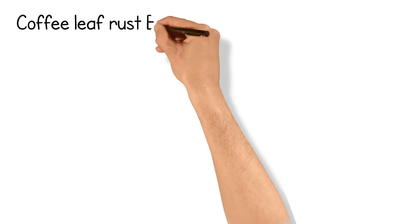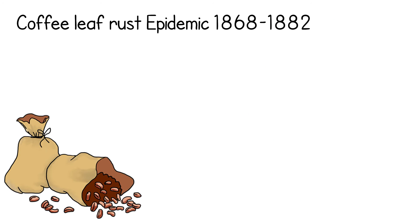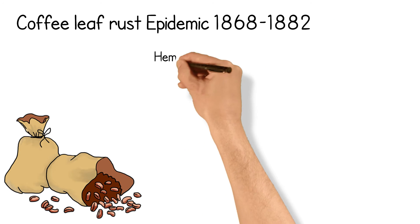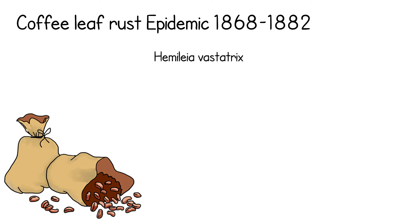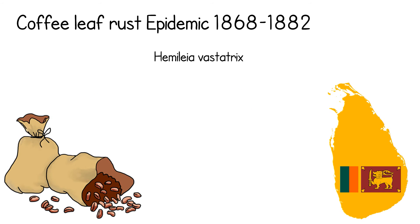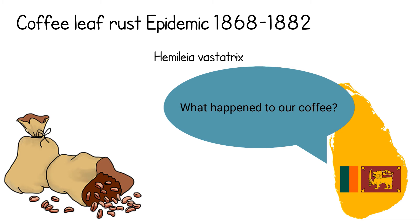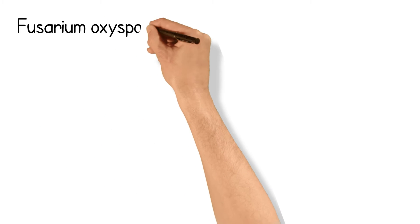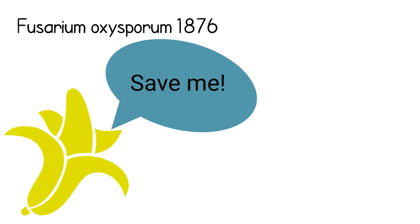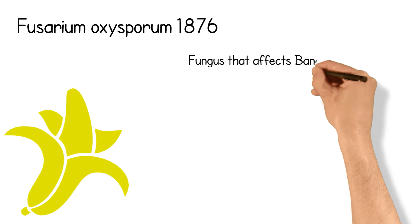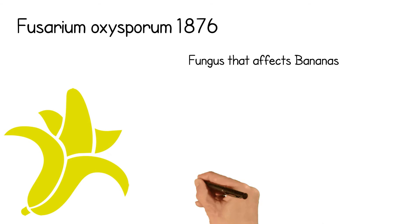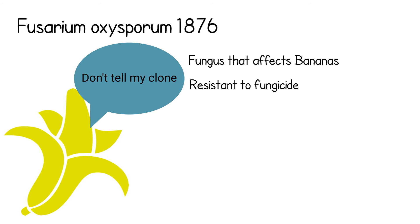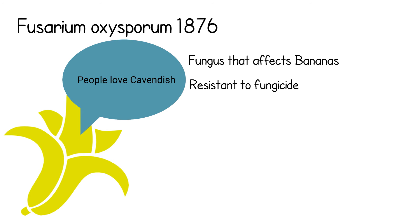Coffee Leaf Rust Epidemic, 1868–1882. Hemileia vastatrix, a fungus, eventually wiped out the coffee industry in Sri Lanka. It has since spread to almost every country in the world, affecting coffee production. Fusarium oxysporum, 1876 — the fungus responsible for Panama disease — was discovered in bananas in Australia. The fungus is resistant to fungicide and cannot be controlled chemically. It threatens global banana production and the world's most popular cultivar, Cavendish.